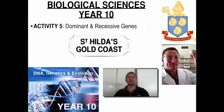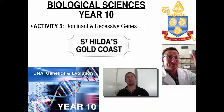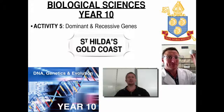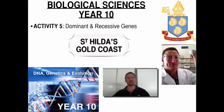Hi guys and welcome to Biological Sciences for Year 10. This is Activity 5 where we're going to look at our first introduction into genetic crosses, but before we do that we want to identify some key terms and look at dominant and recessive genes, how they come about, how we label them, and how we can use them in our crosses. In Activity 6 we'll run through all our single cross problems and I'll show you how to work out the probability of getting a certain characteristic.